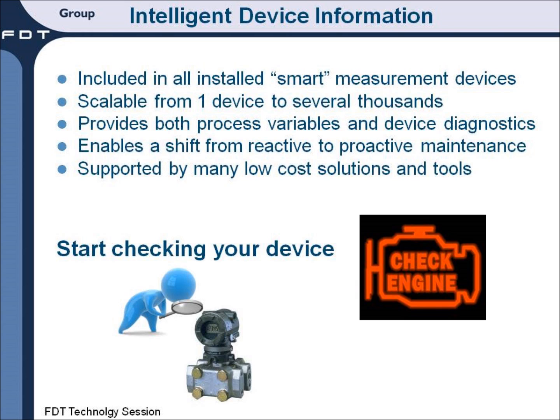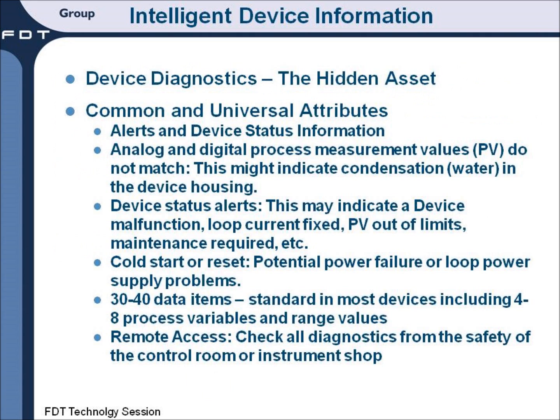Regardless of the size or age of your plant, you can look into your device to see if all is well or if there is a potential problem. The information includes both process and device diagnostics, and the information enables a shift from being reactive to proactive. Also, there are many cost-effective solutions on the market today to help you access this intelligent device information, so you can start checking to see if you have any check engine lights on in your plant.